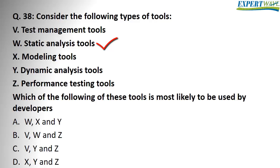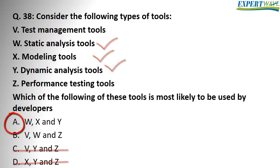If option W is correct, then we have our answer narrowed to A or B. Looking at the remaining options, V, X, Y, or Z would solve the question. Option X — modeling tools — and option Y — dynamic tools — are also used by developers, so the correct answer is A.